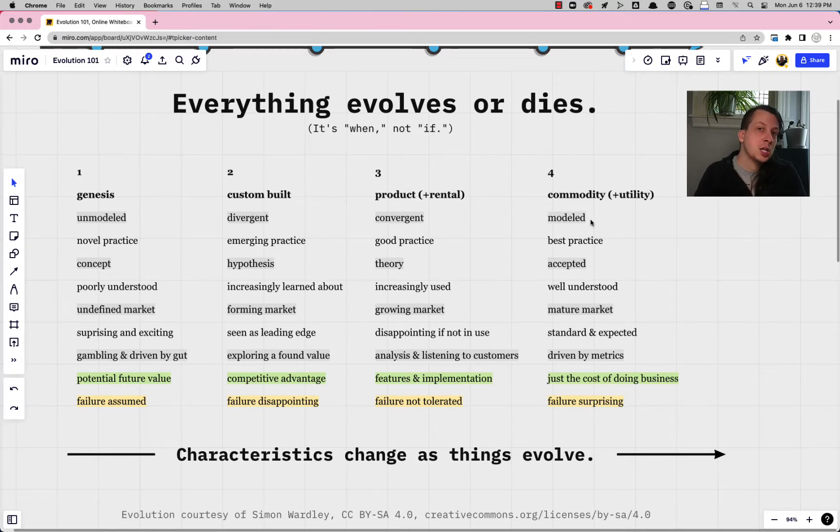So first thing to notice is that this change is happening. Things are starting out in Genesis where they're unknown, uncertain, poorly understood, and they fail all the time. And the reason that we do anything in Genesis is because there's high potential future value. There might be something worth learning about or using here. It's the creation of novel and new things.